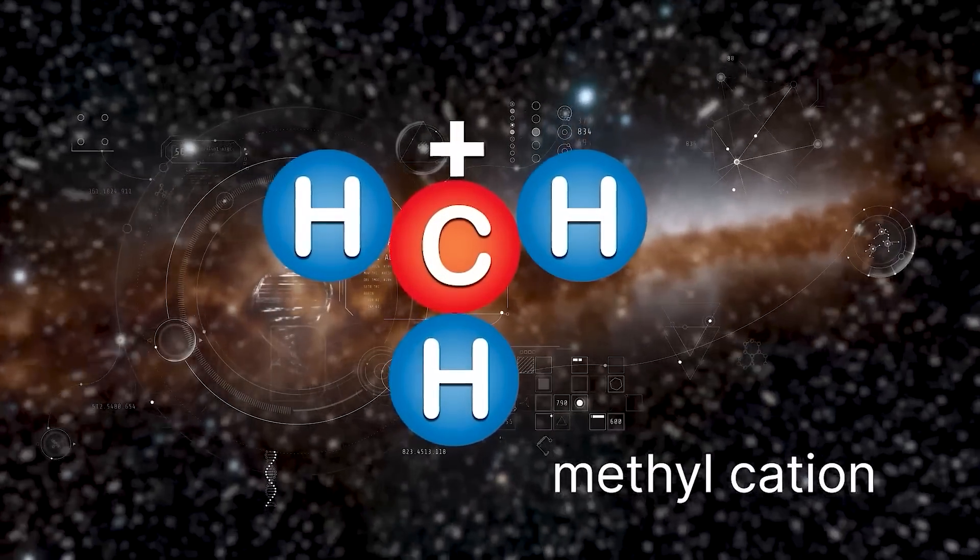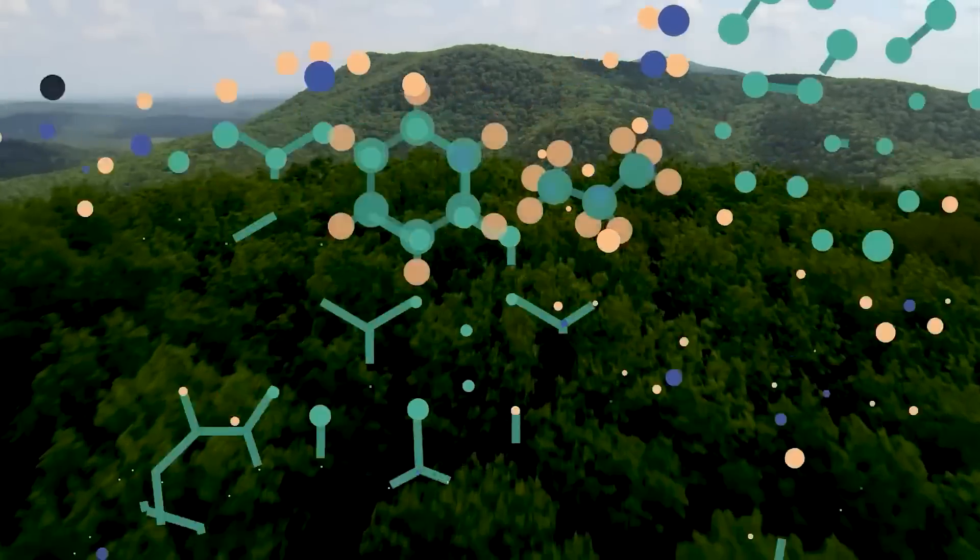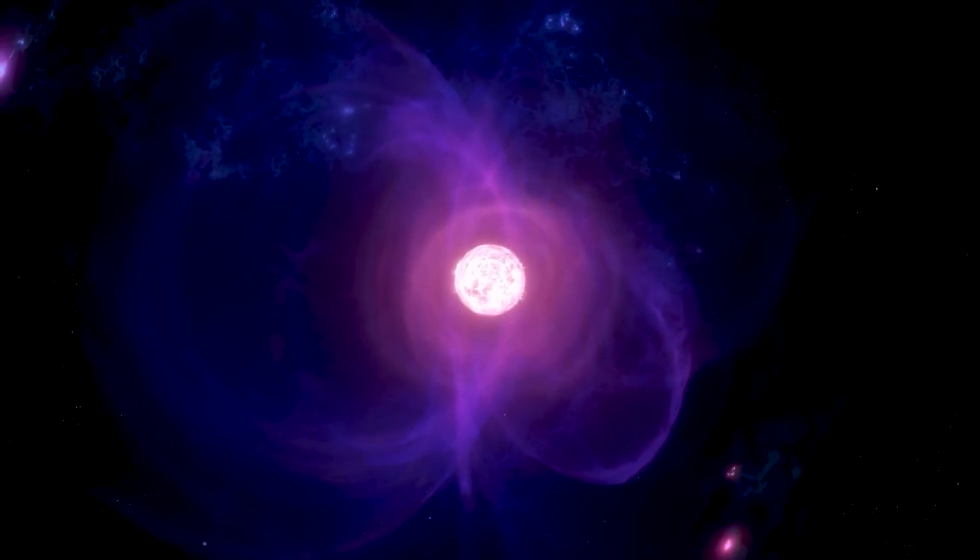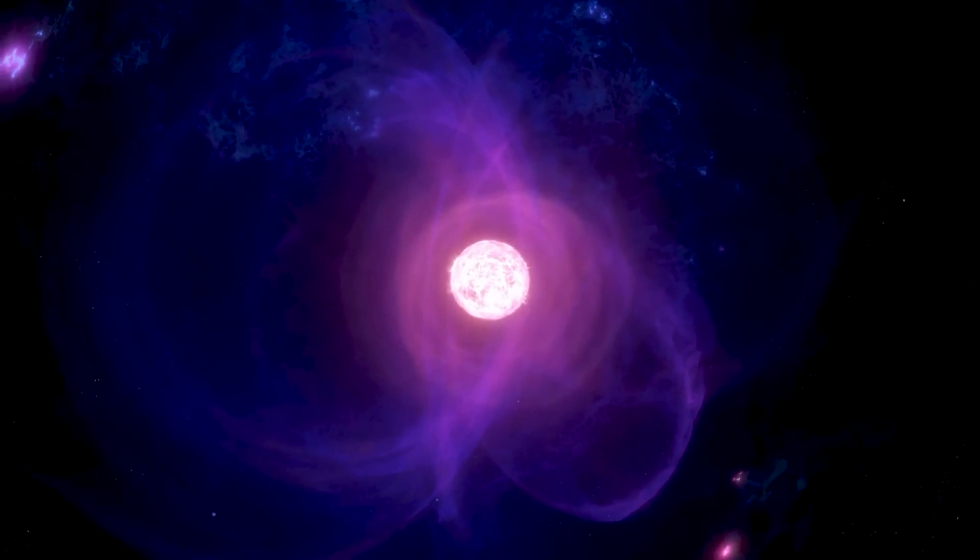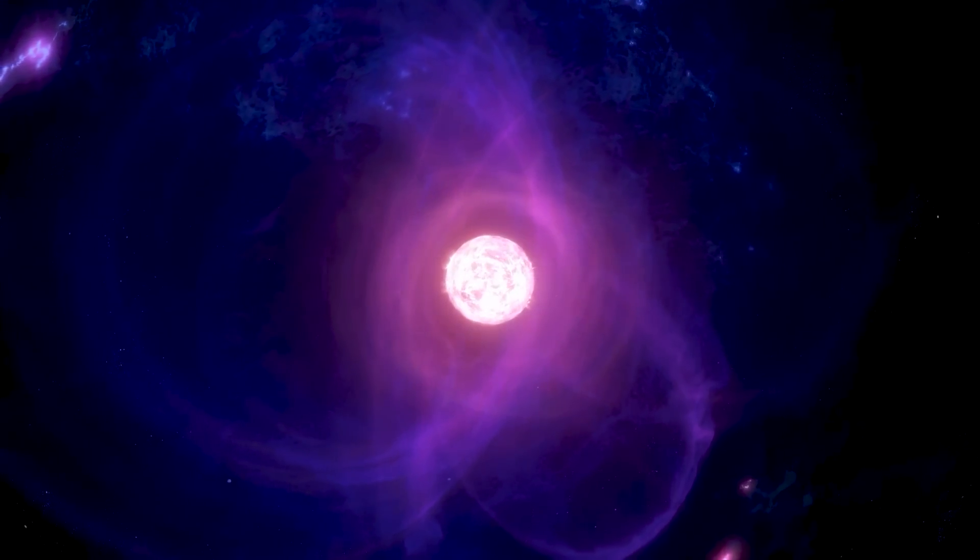These molecules, known as polycyclic aromatic hydrocarbons, or PAHs, usually appear near young, massive stars emitting abundant ultraviolet light.